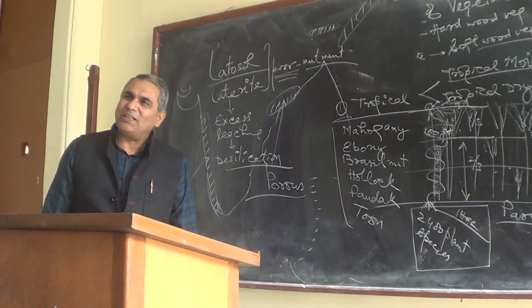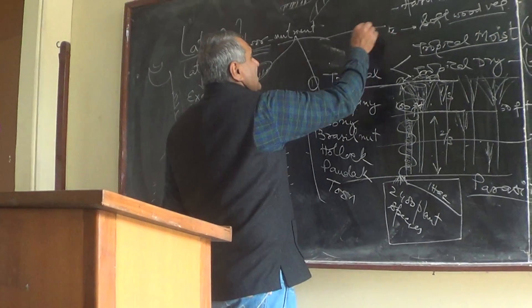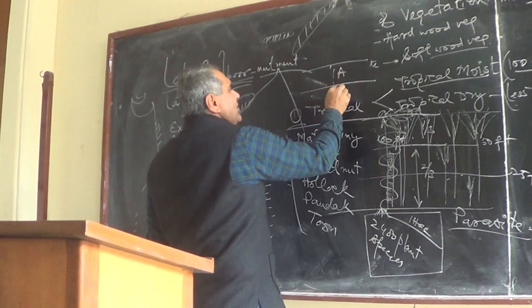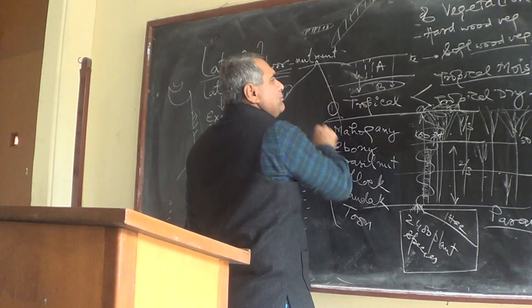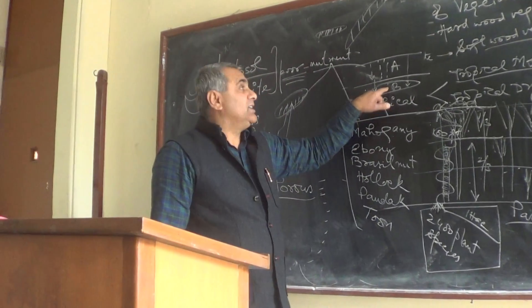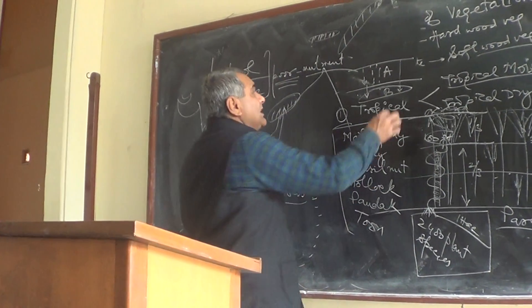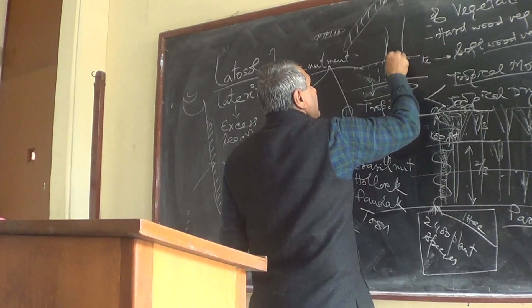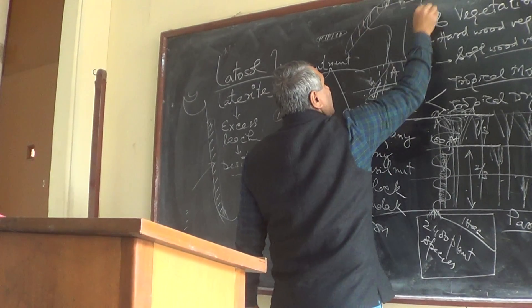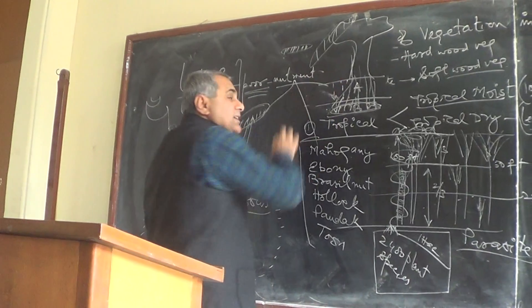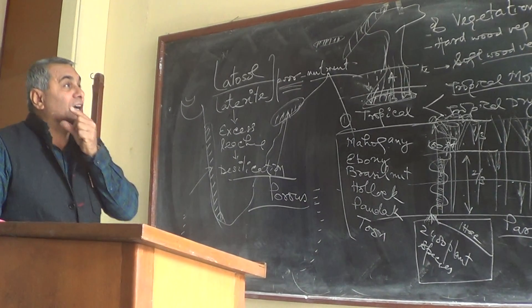Despite being a poor soil, dense vegetation rich in humus exists here. Because of leaching, there are soil horizons — the A horizon and B horizon. All nutrients leach down and accumulate in the B horizon, so the B horizon is always rich while the upper A horizon is very poor. Trees have their roots in the B horizon, accessing nutrients. This is the nature of the soil in this area, which supports tropical evergreen rainforests.